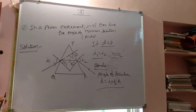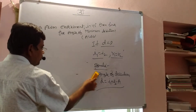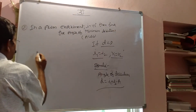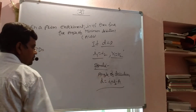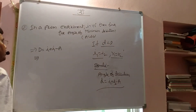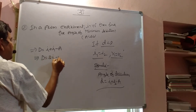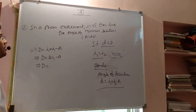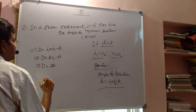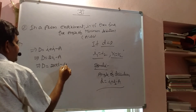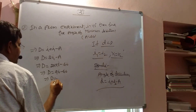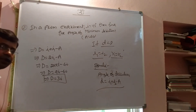Now apply the conditions. When minimum deviation occurs, I1 and I2 become equal. So D equals I1 plus I1 minus A, which gives D equals 2 into 45 degrees minus 60 degrees, equal to 90 minus 60, equal to 30 degrees. This is the angle of minimum deviation. Here I1 and I2 are both equal to I, which is given as 45 degrees.